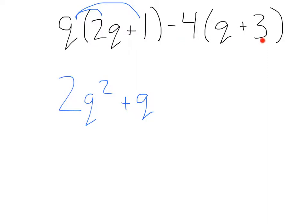Moving on, we have negative 4 times q plus 3. Remember this negative 4 is going to have to distribute all the way across. So, doing that, we'll have negative 4 times q, that'll be minus 4q, and negative 4 times 3 will be negative 12. Let's see if we have any like terms.